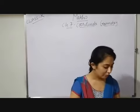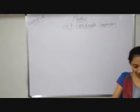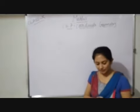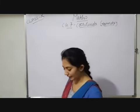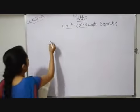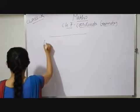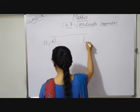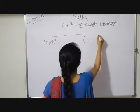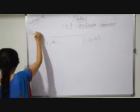Next question is find the ratio in which the Y axis divides the line joining line segment at points (5, -6). This point is (-1, -4). This is your question.